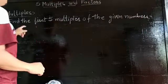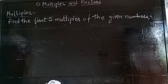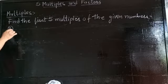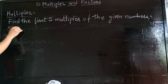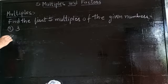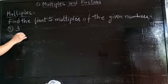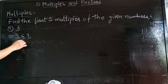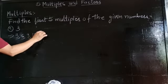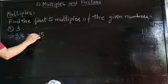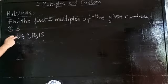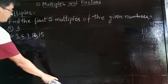Let's find the first five multiples of 3. 3 ones are 3, 3 twos are 6, 3 threes are 9, 3 fours are 12, and 3 fives are 15. These are the first five multiples of 3: 3, 6, 9, 12, and 15.